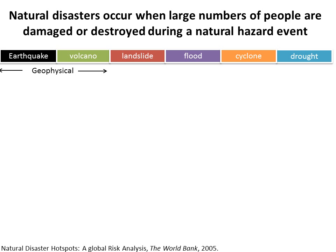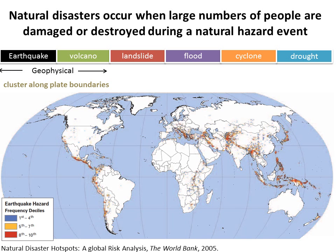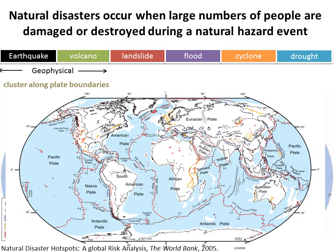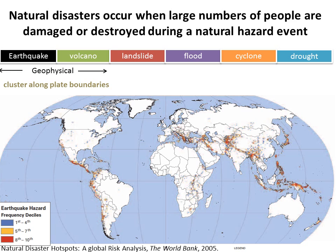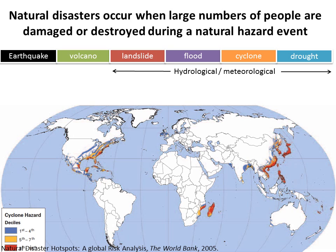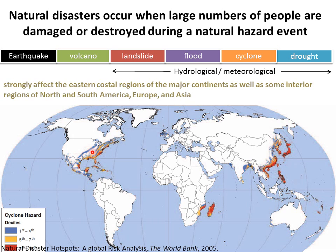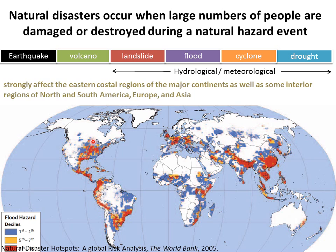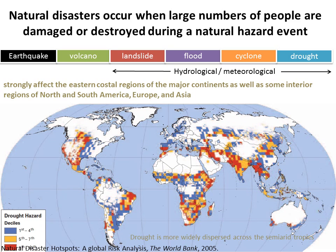Earthquake and volcano are classified as geophysical hazards, which tend to occur along the plate boundaries as denoted by red and black lines corresponding to the warm color here. The rest of them are classified as hydro-meteorological hazards, which strongly affect the coastal region — eastern coastal regions of the major continent for cyclone — as well as some interior regions of North and South America, Europe, and Asia for flood hazard.